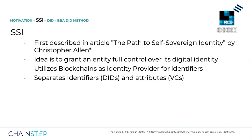SSI was first described in the article 'The Path to Self-Sovereign Identity' by Christopher Allen. The key idea is to grant an entity full control over its digital identity. To do so, it utilizes blockchains as identity provider for digital identifiers. Even though blockchains are not the only option to store these identifiers, they are the most prominent ones. Another key aspect of SSI is the separation of identifiers and attributes.